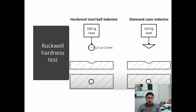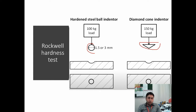In the Rockwell hardness test, we use two types of indenter: a ball indenter and a diamond cone indenter. For the ball indenter, we use a 100 kilogram load, while for the diamond cone indenter, we use a 150 kilogram load.